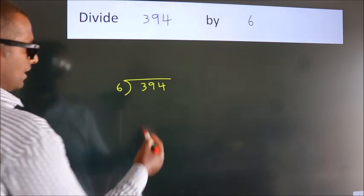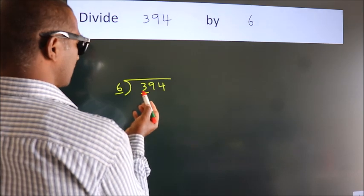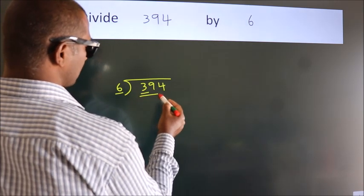Next, here we have 3, here 6. 3 is smaller than 6, so we should take two numbers, that's 39.